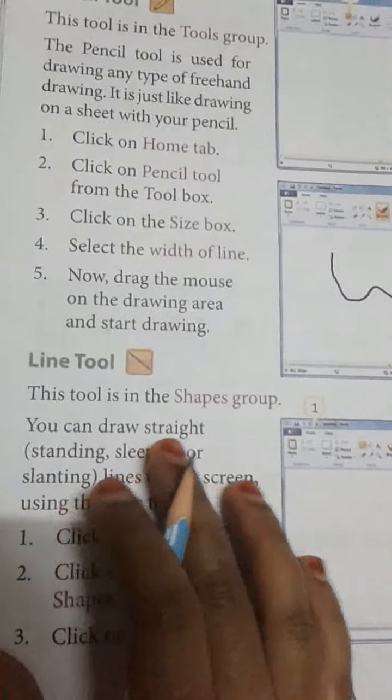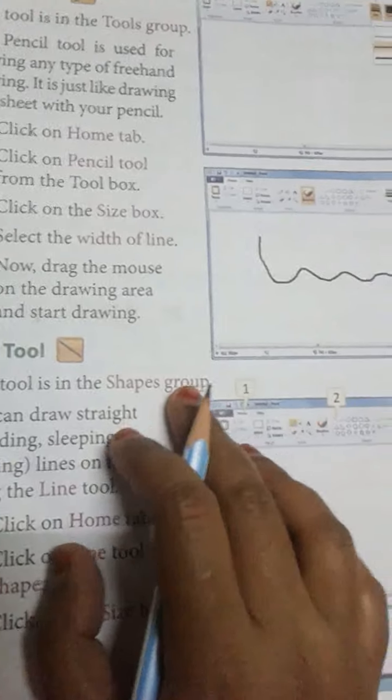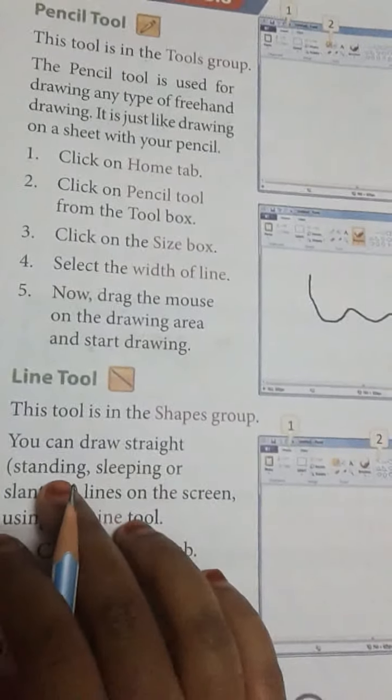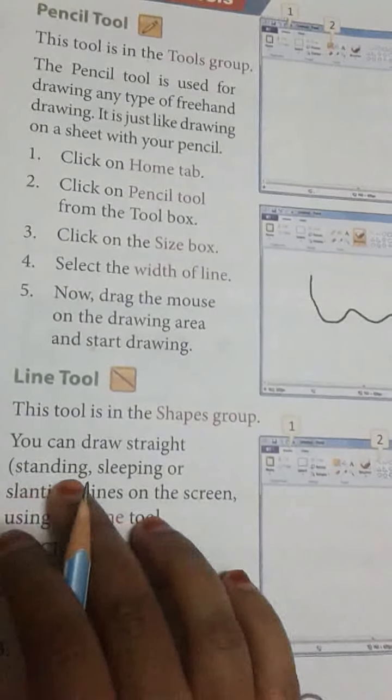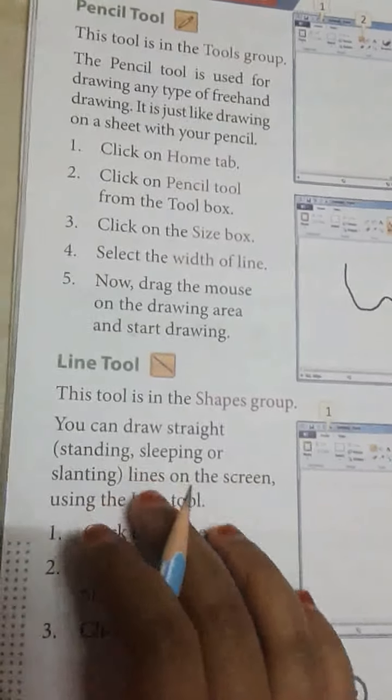With the line tool, you will find it in the shape group. You can draw a standing line, sleeping line, and sliding line.